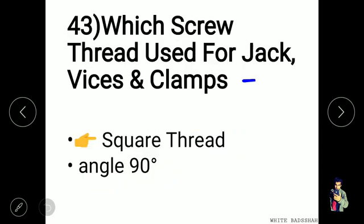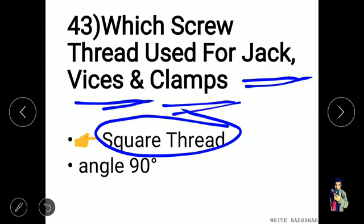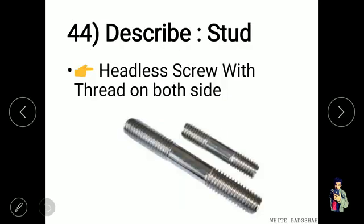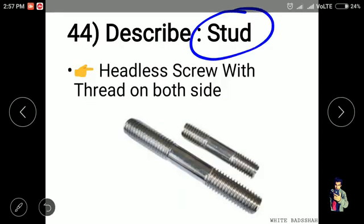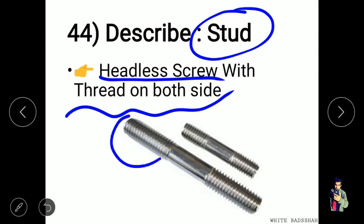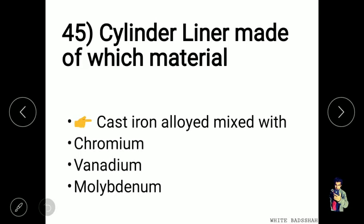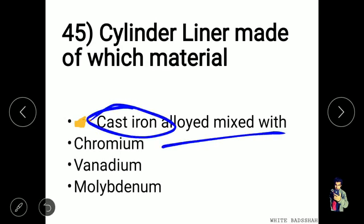Square thread is used for jacks, vices, and clamps — the angle of the square thread is 90 degrees. A stud is a headless screw with threads on both sides. Cylinder liners are made of cast iron alloy mixed with chromium, vanadium, and molybdenum.